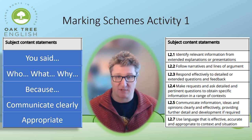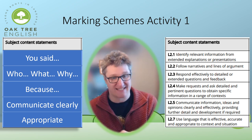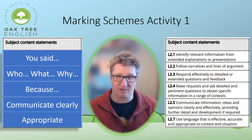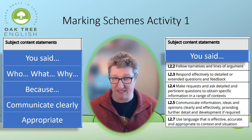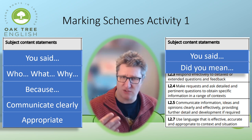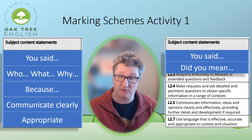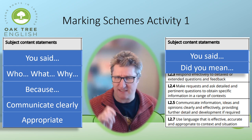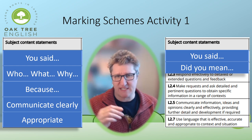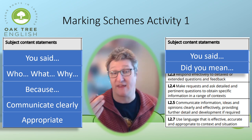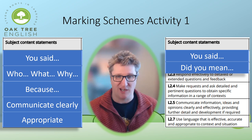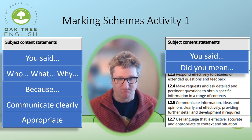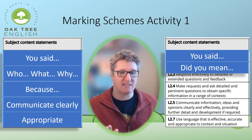Level two is pretty much the same — I'm going to whizz through these as well. You'll notice there are six criteria as against the five for level one. The first is to identify relevant information from extended explanations or presentations. This is again your 'you said' element. You need to follow narratives and lines of argument and show that you've actually engaged with what your colleague said — for example: 'You said that McDonald's have improved. Did you mean the quality of their food, or more importantly, the quality of their grammar?' The third criterion is to respond effectively to detailed or extended questions and feedback, same as level one. You can say things like: 'I don't know the answer to that particular question, but here's something I do know.' Try to extend your answers and give a full answer. Don't interrupt, and don't hijack the floor to give your own speech.